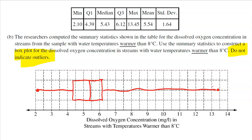But just looking at that, it's going to be a little bit skewed to the right. The right-hand side is more spread out. And 50% of these rivers, they didn't really tell us how many rivers they looked at that were warmer than 8 degrees, but 50% of them are somewhere in that range of 4.39 to 6.12. So definitely on the lower side.